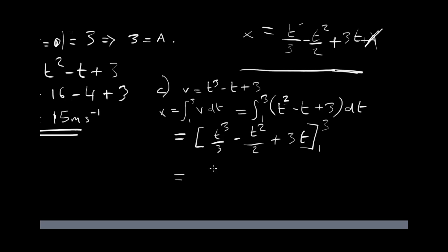So, if we put a 3 in here, we get 3 cubed which is 3 times 3 is 9 times another 3 is 27 divided by 3 minus the 3 squared which is going to be 9 over 2 plus 3 times t. If t is 3, that's going to be another 9 minus the same thing but with t is equal to 1. So, we would have 1 third minus t squared over 2, so that's 1 and a half plus 3 times t which is 1, so that's 3.